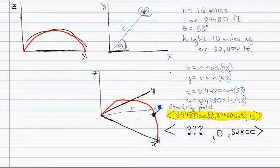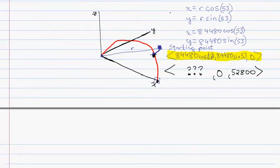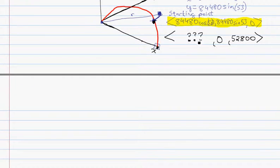Alright, welcome back. So what we were trying to figure out is this right here. What is this x component of where we're going to end when we shoot this rocket? When we shoot this rocket out of the sky? Where is this going to be?